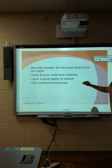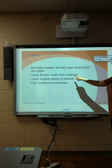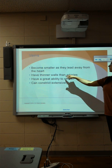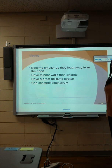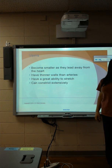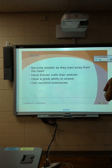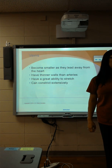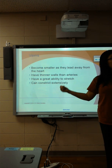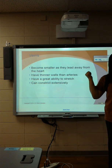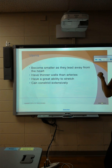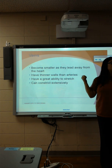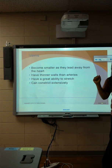Veins return to the heart. They are thinner-walled than arteries — because why? What type of pressure do you have in arteries? A lot of pressure — a whole lot of pressure. So veins are coming back to the heart, we don't have a whole lot of pressure, so we don't have to be really thick.